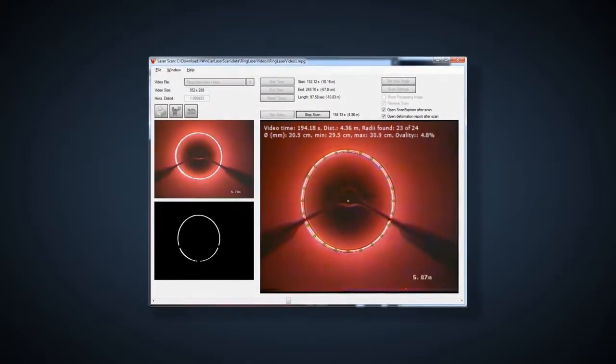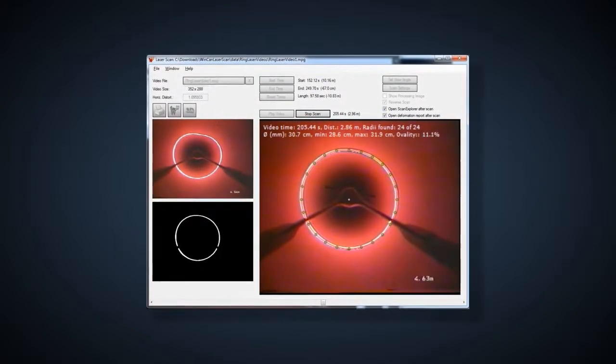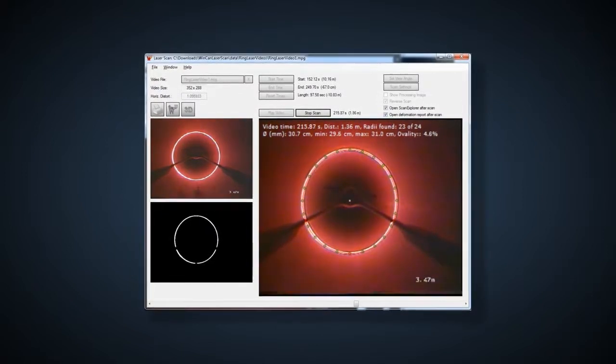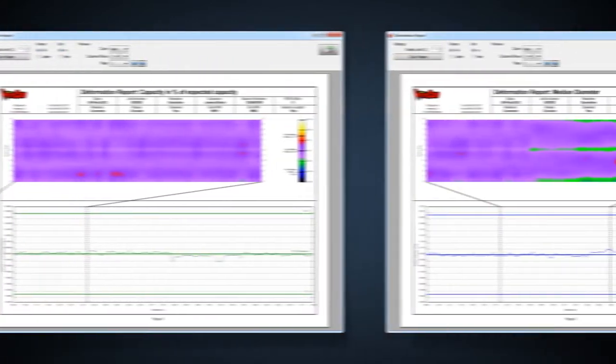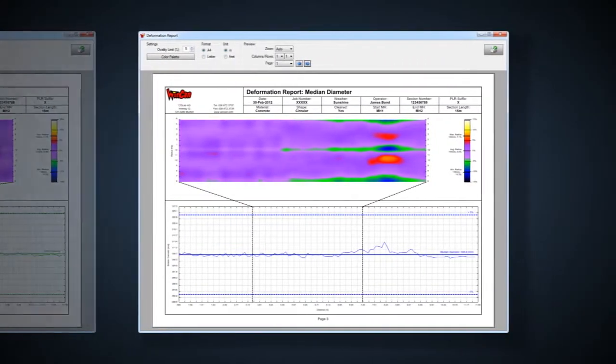Once this analysis is finished, you can automatically generate any number of deliverables, including a deformation report with graphs showing pipe ovality, capacity, and median diameter.